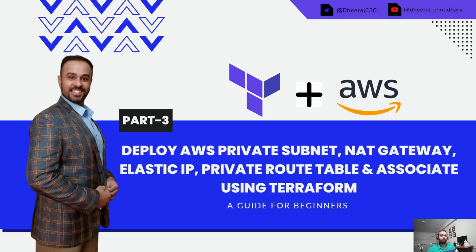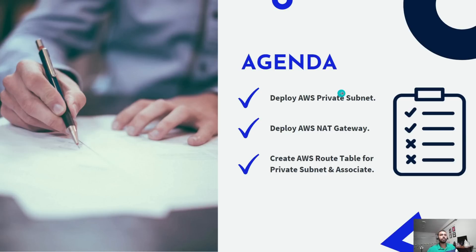Let's go ahead and see what is the agenda for today's tutorial. First, we are going to deploy an AWS private subnet. Once we deploy the private subnet, we are going to deploy an AWS NAT gateway and its dependencies. Then we are going to create an AWS route table for the private subnet and associate them.